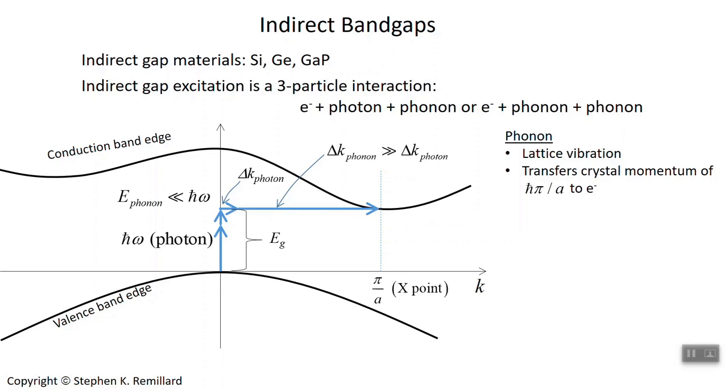And a phonon is able to transfer momentum to the electron to get it to reorient its momentum in K-space over to the X-point. So it has to transfer an amount of momentum that equals pi over A times h-bar, which is where the X-point is located. So we just accept that the phonon can deliver this impulse to the electron and allow it to go over here.